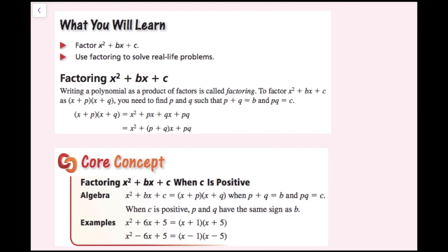In this lesson, we're going to be factoring x squared plus bx plus c and using factoring to solve real-life problems. Writing a polynomial as a product of factors is called factoring. To factor x squared plus bx plus c as x plus p times the quantity x plus q, you need to find p and q such that p plus q equals b and p times q equals c.